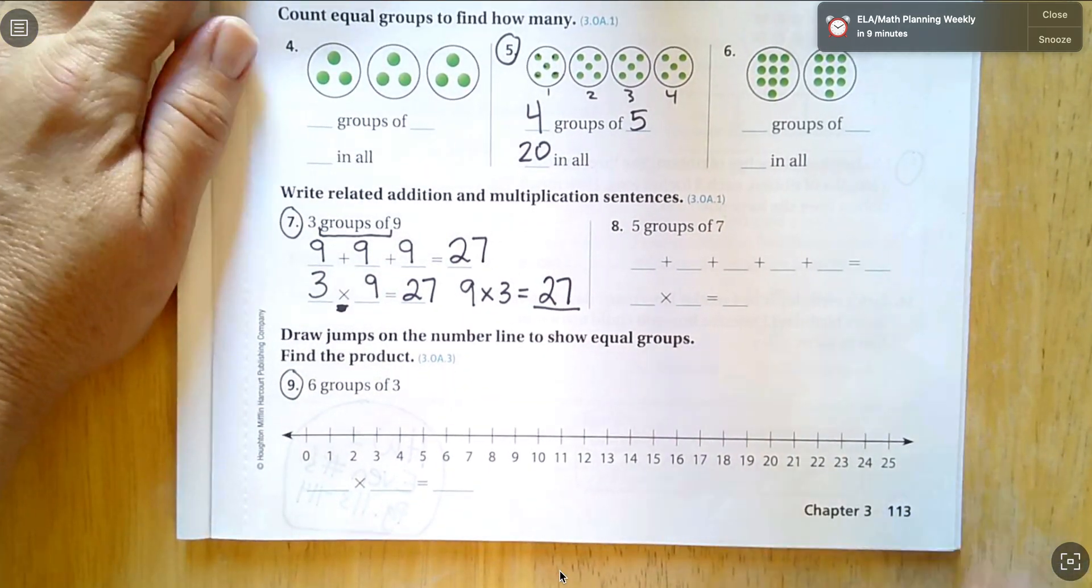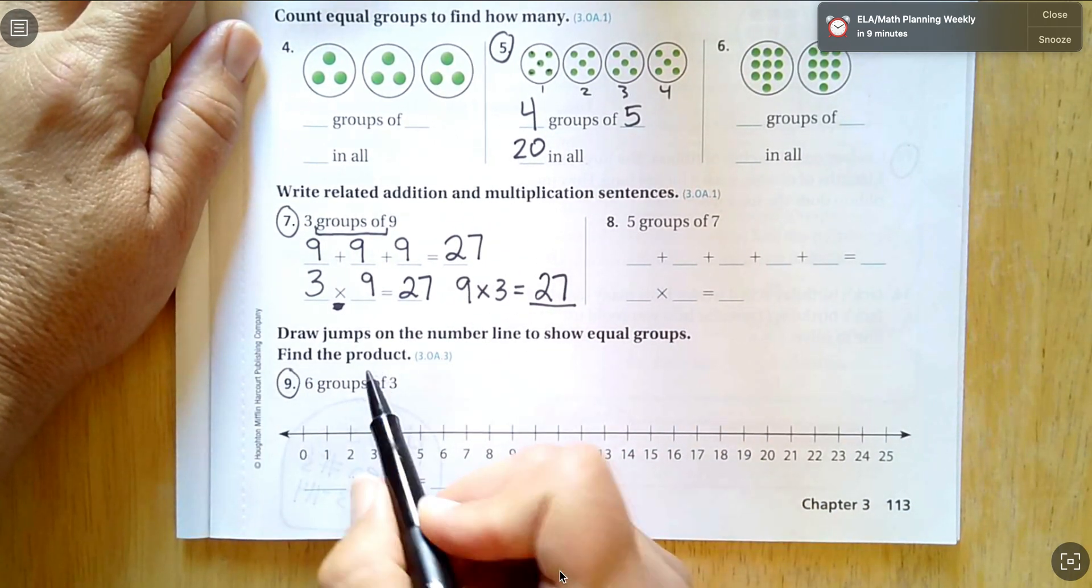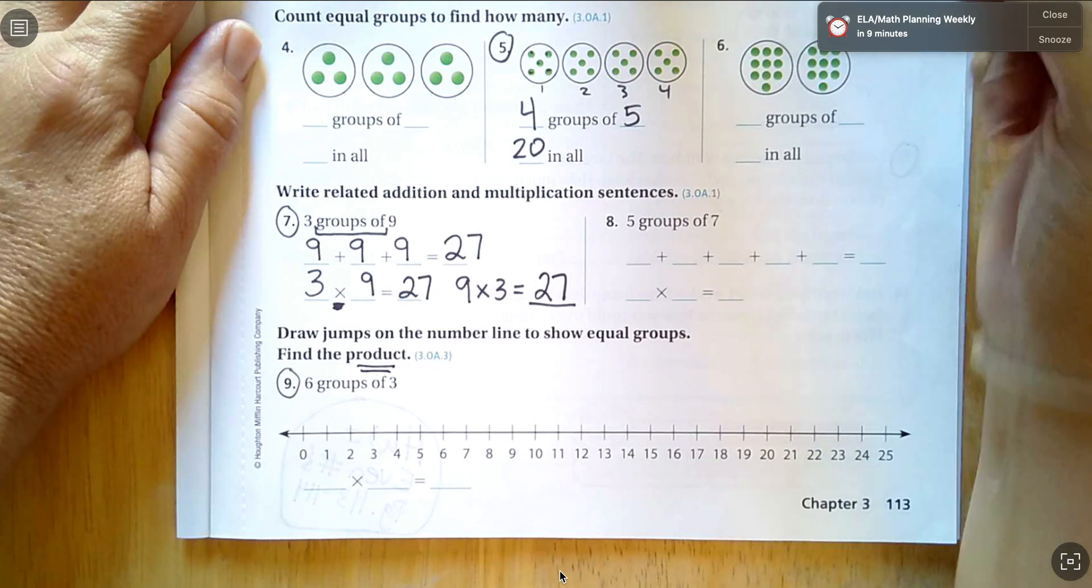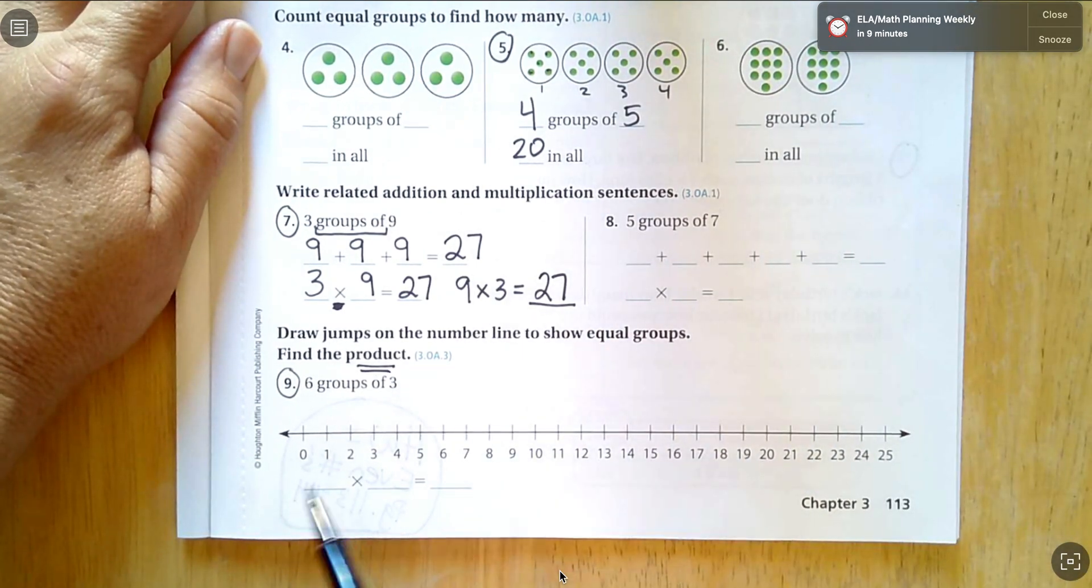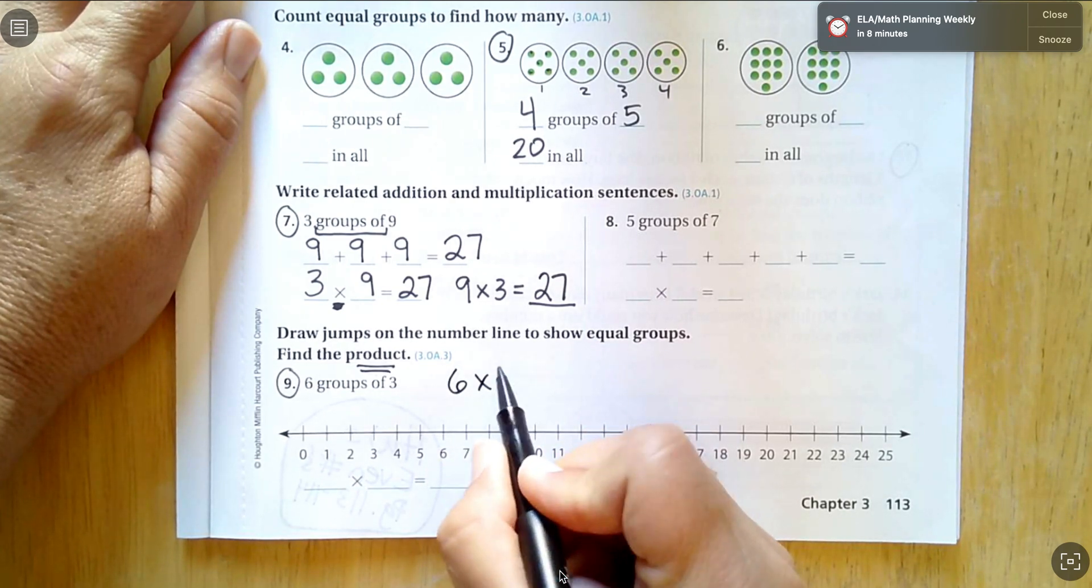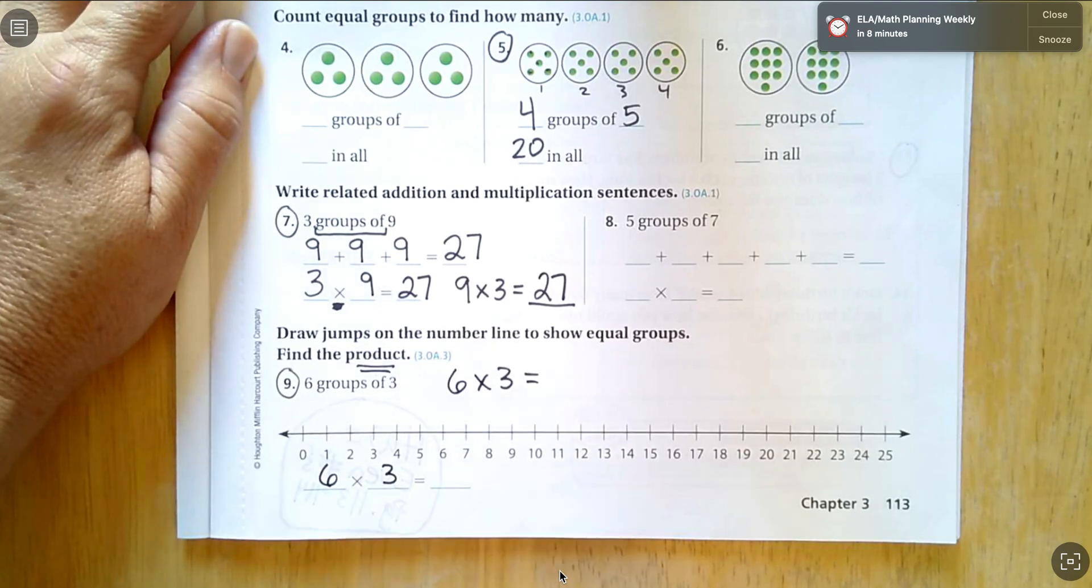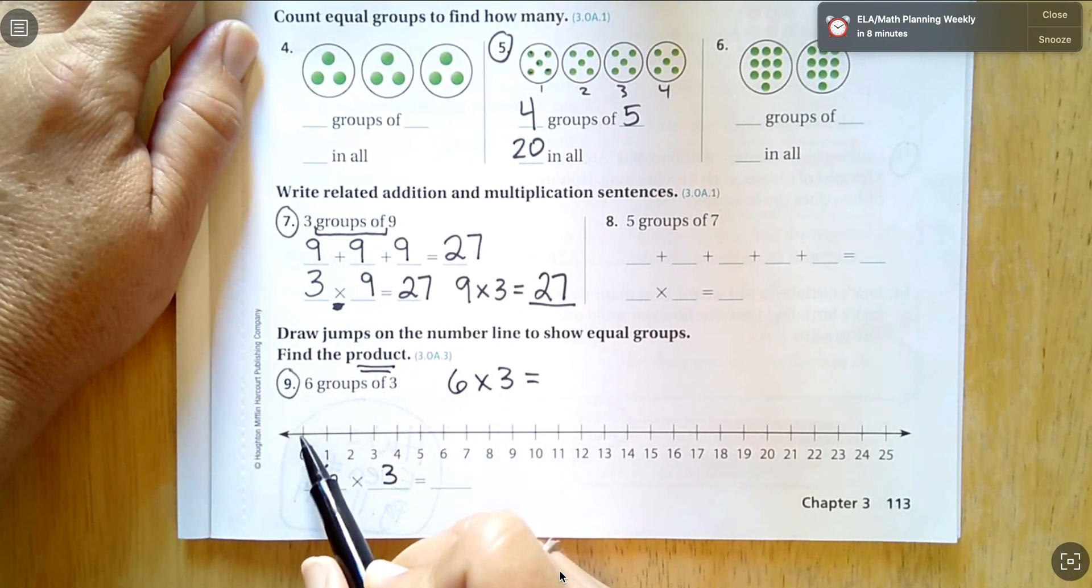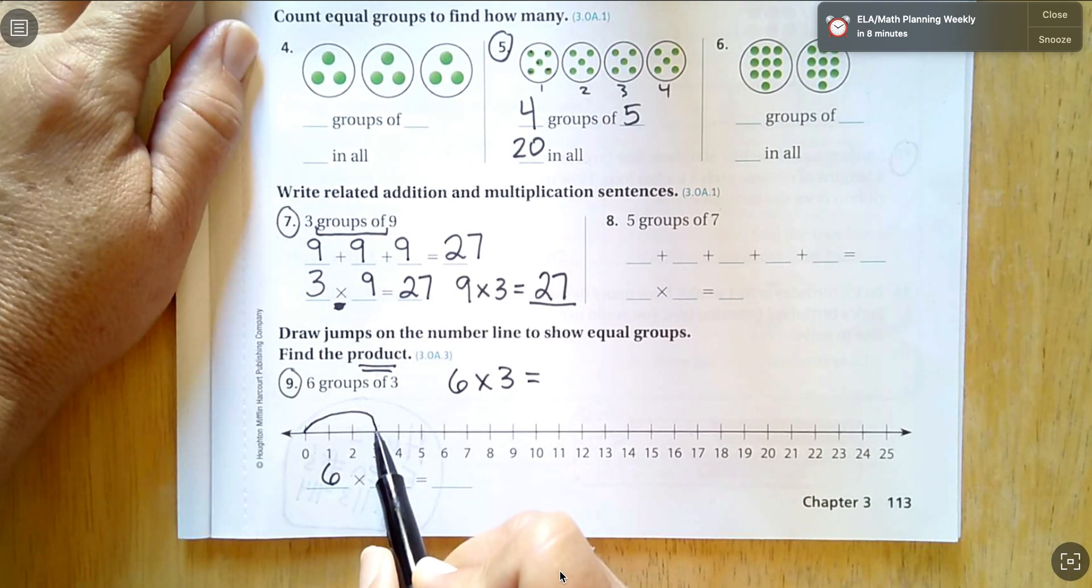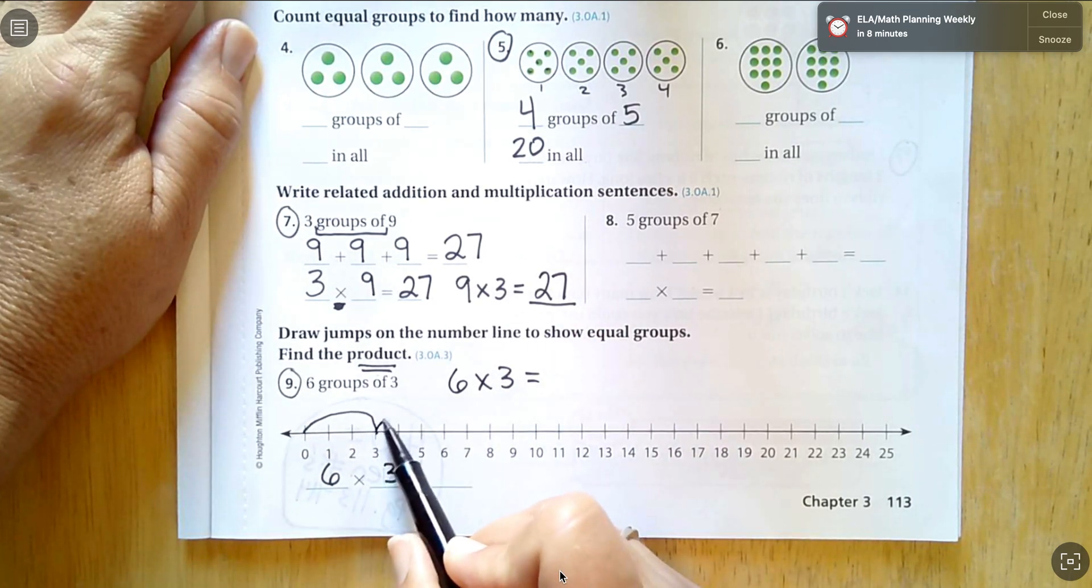Now we're going to draw the jumps for number nine on the number line to show equal groups. We find the product, which when we double checked, we remember the product is the answer. So six groups of three, six times three. I'm going to jump every third. So I'm jumping over two lines. That's one other way I can think of it.